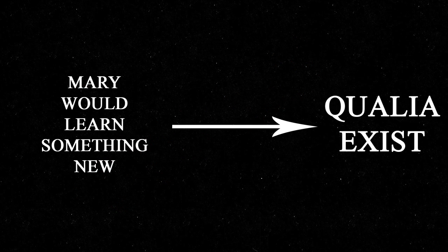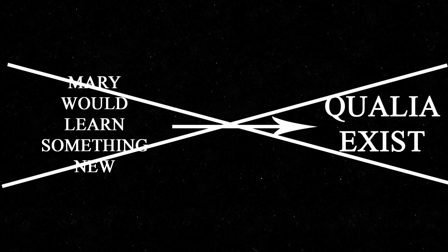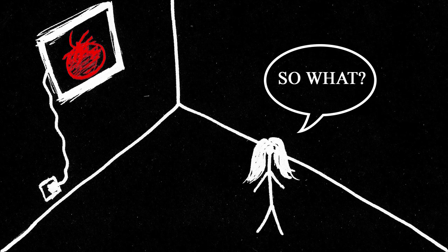However, you could reason this isn't very convincing to think qualia exists just by saying Mary would learn something new. Mary should already have a functional knowledge and know exactly what to expect when she comes across the color red for the first time. That functional knowledge should serve as the experience of seeing the color red.